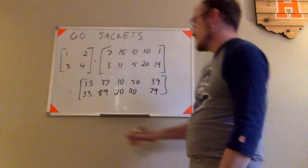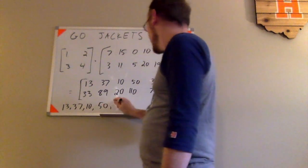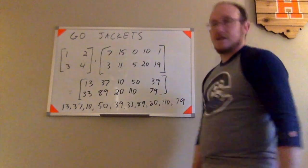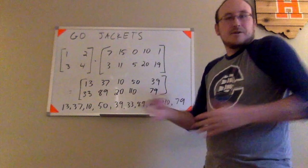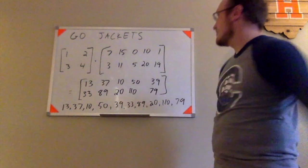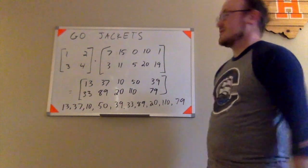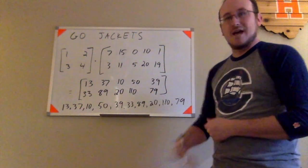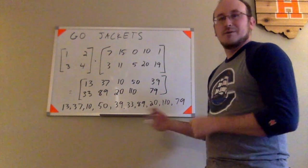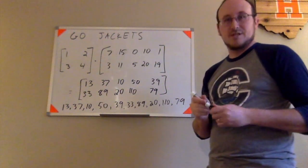At this point I have encoded the message as this string of numbers: 13, 37, 10, 50, 39, 33, 89, 20, 110, and 79. Looking at that series, I don't see only numbers 1 through 26 — there's no way to just say 1 must be A, 2 must be B, and so on. It looks like a seemingly random string. Even if there were repeated letters, each would be represented by a different number due to the matrix multiplication. It makes it almost impossible to decipher the message without knowing the matrix used and being able to find its inverse. That's how you encode a message using matrices.